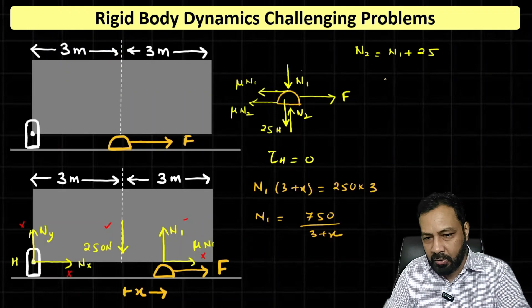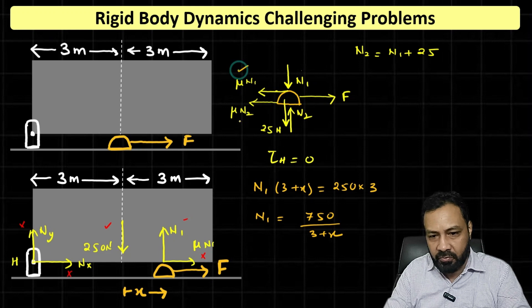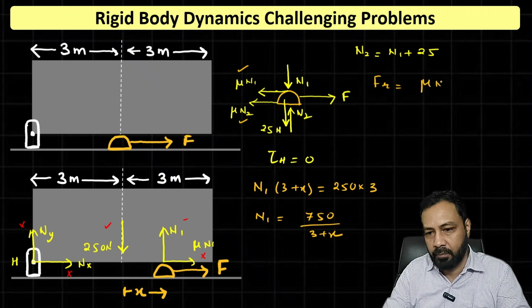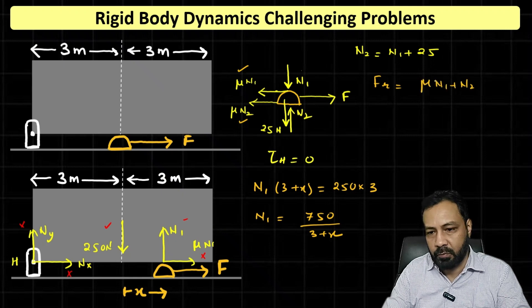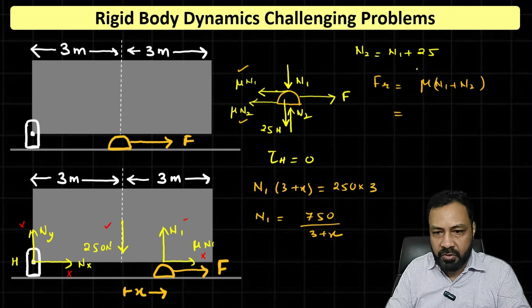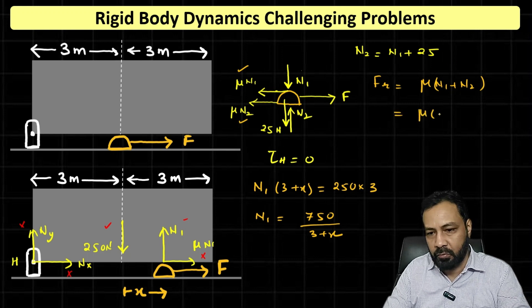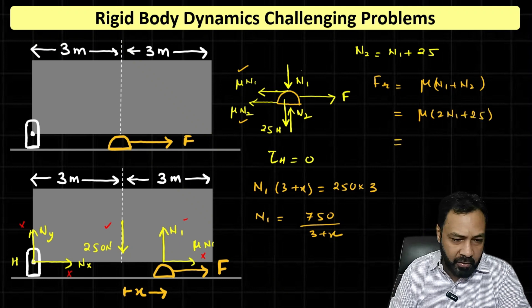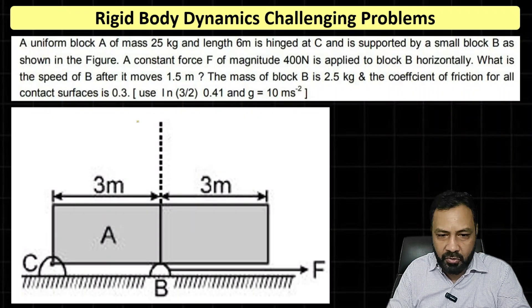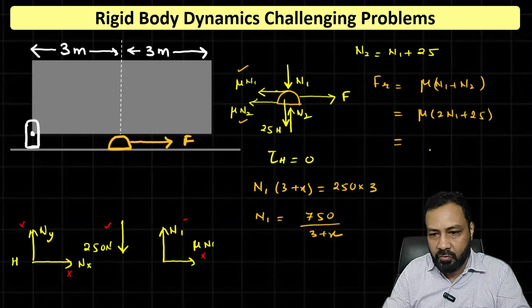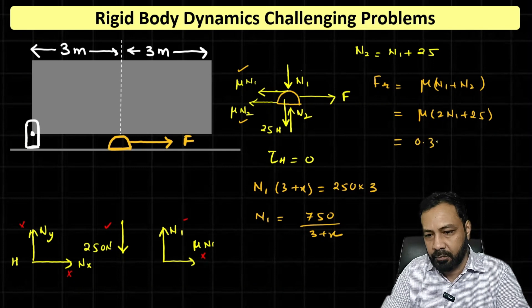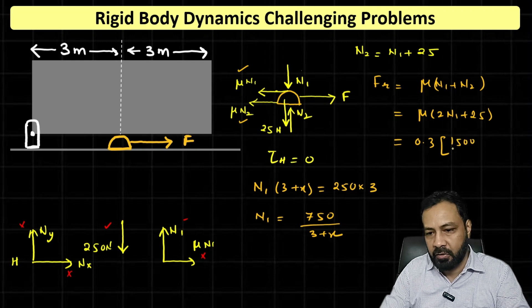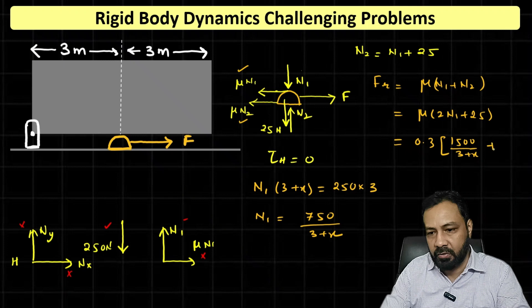First, let me find the work done by both frictions. Total frictional force is μN1 plus N2, and N2 equals N1 plus 25. So this is μ into 2N1 plus 25, and μ given in the question is 0.3. So 0.3 into 2N1, from here 2N1, this is 1500 divided by 3 plus x, and that is 25.